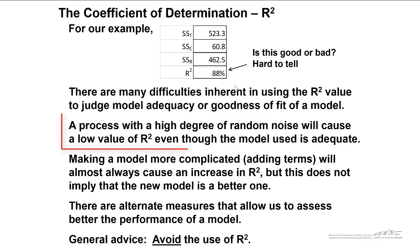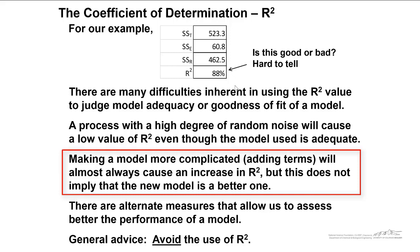And the reason for that is a process with a high degree of random noise will cause a low value of R squared, even though the model used might be adequate. Making a model more complicated by adding terms will almost always cause an increase in R squared. But this does not imply that the new model is a better one.